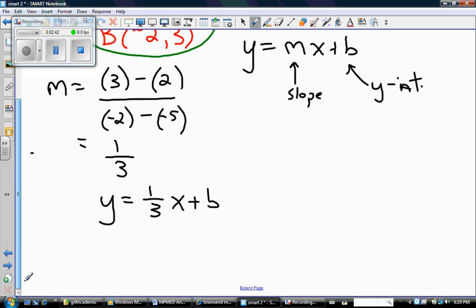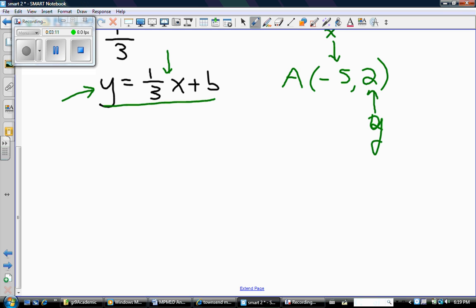Let's take point A. Point A is, if x is negative 5, y must be 2. That's telling me that in this line, if x was negative 5, then y would be 2. And that means I'm going to do a double substitution for both x and y.